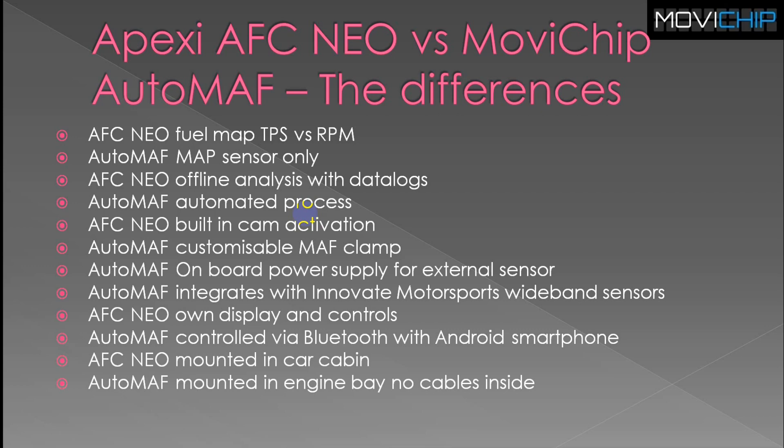You can also set the minimum MAF voltage you want to send to the ECU, and clamp the MAF signal if you're using an atmospheric blow-off valve on your engine. The Auto Math has an onboard power supply so you can add a sensor to your engine if you need to - specifically for cars which don't have a MAP sensor from the factory. The Auto Math will power any 5-volt MAP sensor. It also integrates with Innovate Motorsports wideband sensor, using the 0-5 volt output so the Auto Math can understand the engine's air-fuel ratio.